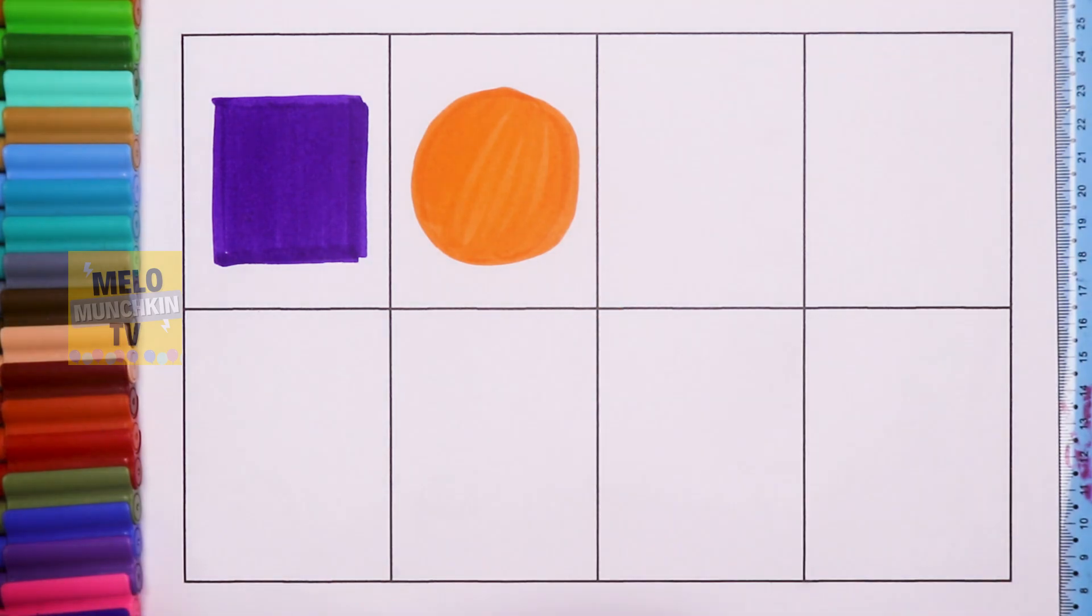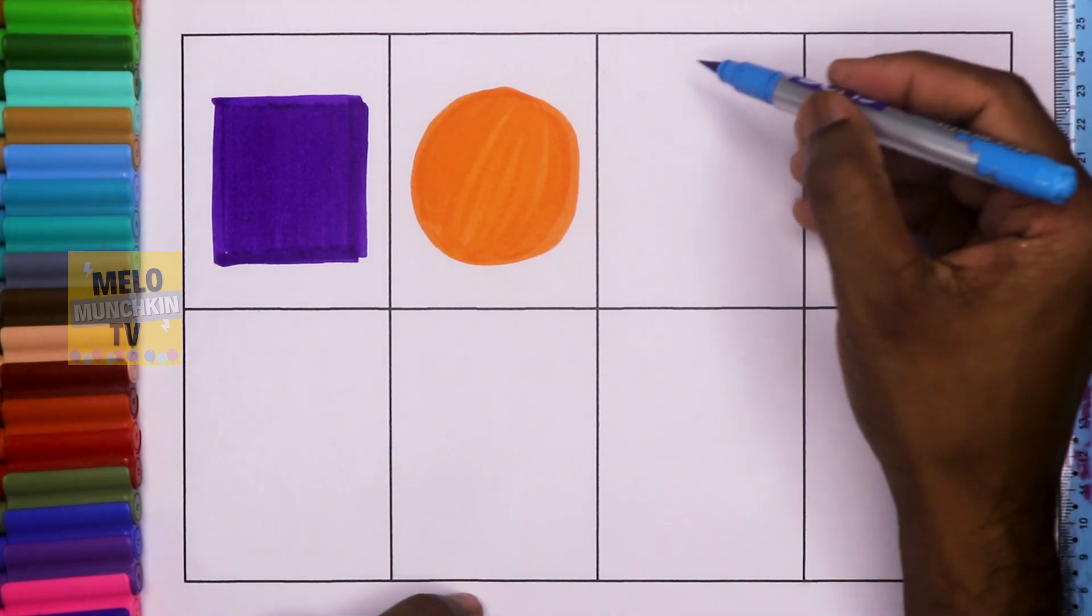So this is circle. Next I'll take blue color to draw a rectangle.